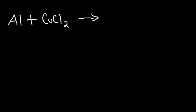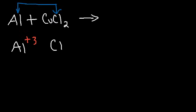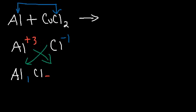In a single replacement reaction, aluminum metal is going to replace copper metal, and in the process aluminum is going to pair up with chlorine. As a metal, aluminum has a plus 3 charge and chlorine has a minus 1 charge. So to write the formula between aluminum and chlorine you need to use the criss-cross method, giving AlCl3.